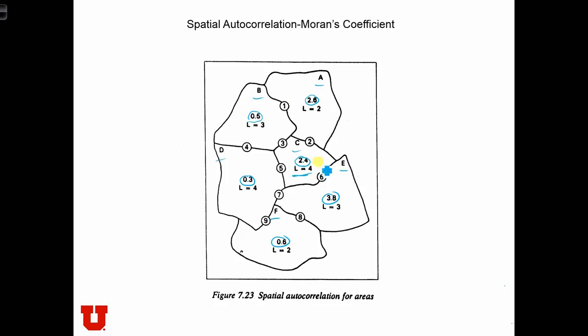This L is the number of links each polygon has when we use a rook connectivity structure. So neighborhood C has a value of 2.4, and we see that it's connected to 1, 2, 3, 4 neighboring regions.